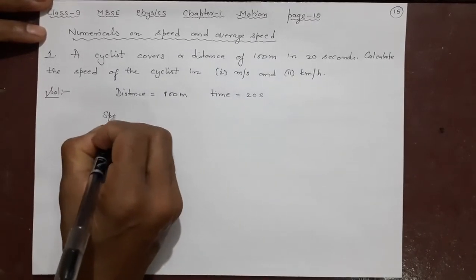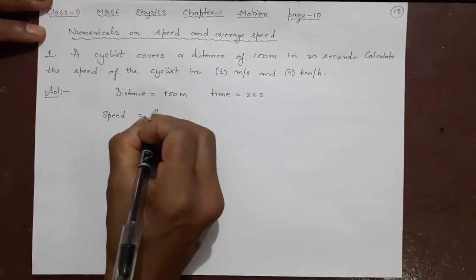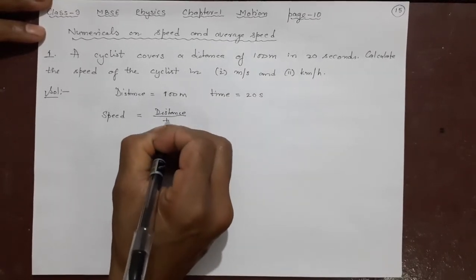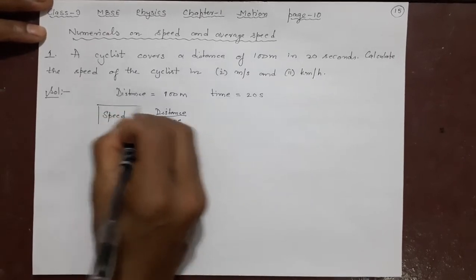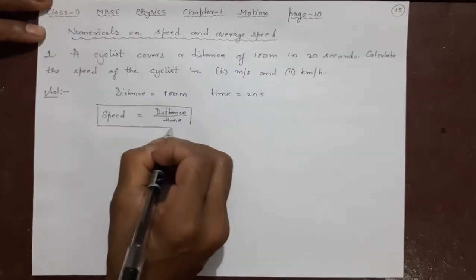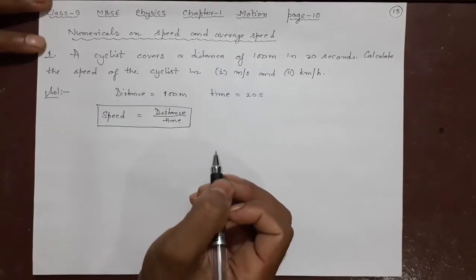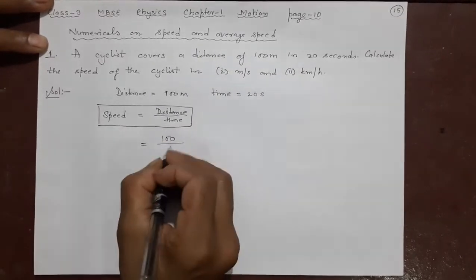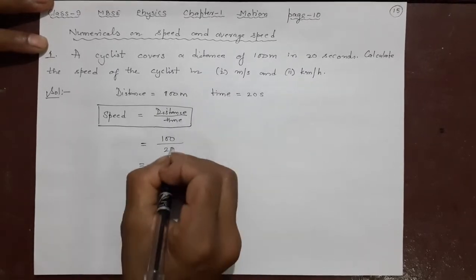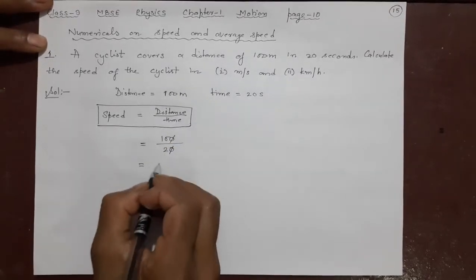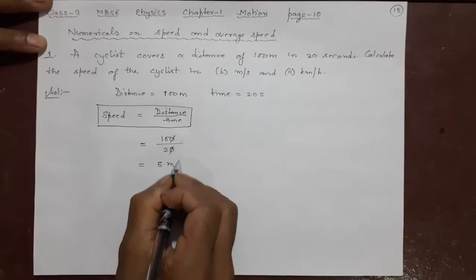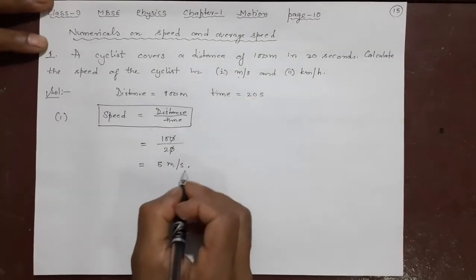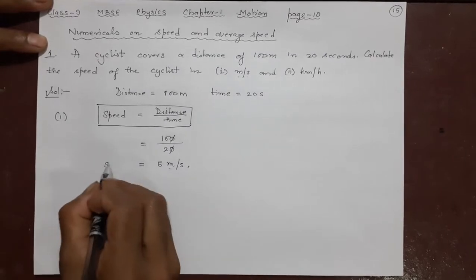Distance by time. This you must remember. I will box it so that it can be remembered for future. Now, what is distance? 100. What is time? Keep 20 here. You cancel 2 in this - 2, 5 is 10. So 5 meters per second. Your question number 1 is answered. In meters per second you have calculated the speed.